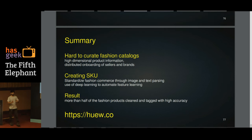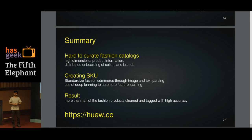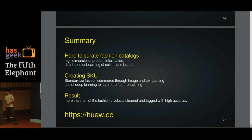To summarize: it's a hard problem to curate fashion commerce catalogs. I showed different pipelines for how to build SKUs and image and text processing pipelines. If you can build such a SKU block, you can expect to see a lot of improvement in the curation of catalogs. I can take any questions now.